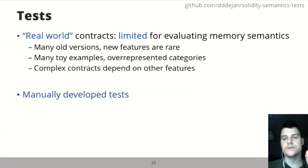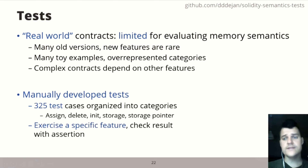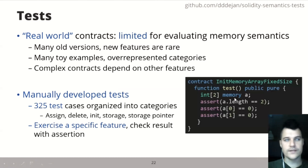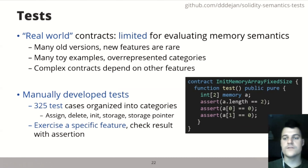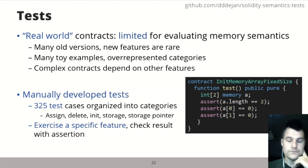Instead, we manually developed a test suite with around 300 tests organized into categories like assignments, deleting, and initialization. Each test exercises a specific feature and checks the result with assertions. For example, a contract declares a fixed-size memory array with default values and checks with an assertion whether they are indeed initialized to defaults. These tests should only pass if the tool properly translates the contract and runs the analysis with appropriate semantics. These tests are publicly available — if you are developing a verifier, I encourage you to run your tool on them.